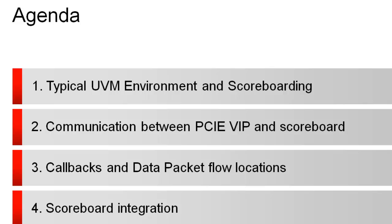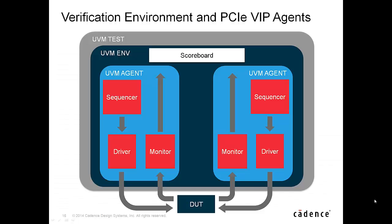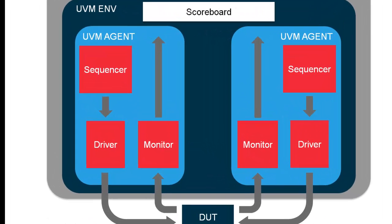Then, we discuss the communication mechanism between PCI Express VIP and a scoreboard, and how callbacks are used to assist with this. Finally, integration of a scoreboard in a UVM environment with PCI Express VIP is discussed. A scoreboard is used for two main functions: it may model a transfer function or reference model, or it could be used to store the data and simply check the output and compare the expected data with received data.